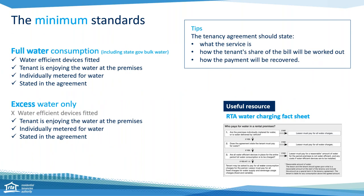With relation to water, the Act talks about service charges, water efficiency, and water consumption — these are the sections of the Act on your screen. Other legislation to consider are lessors' and tenants' obligations generally. What Ben and I have tried to do today is simplify the legislation and list it out in terms of the minimum standards for water charging. Lessors are allowed to pass on full water consumption charges to tenants provided the home meets these minimum standards. In terms of full water consumption — this does include state government bulk water — full water consumption can be charged where the property is water efficient or there are water efficient devices fitted.